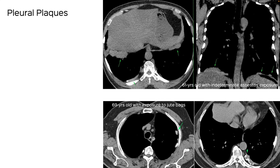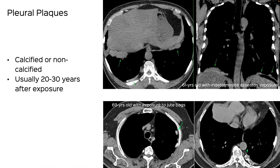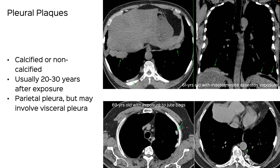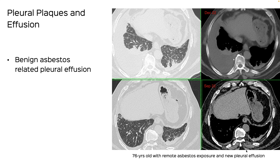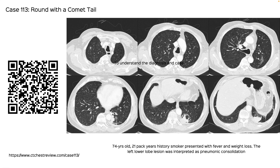I'll show the URL later where I discussed pleural plaques, shown here in two different patients. They can look a little different but can be calcified or non-calcified. They usually occur 20 to 30 years after exposure, typically involve the parietal pleura but may involve the visceral pleura. You can also get benign asbestos-related pleural effusion, and of course mesothelioma.